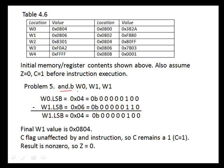Problem 5 says AND.B W0 with W1, placing the result in W1. The least significant byte of W0 is 0x04 and of W1 is 0x06. Writing these in binary and doing a bitwise AND: a 0 ANDed with anything is 0, and a 1 ANDed with 1 is 1. So the final result in hex has the least significant byte of W1 as 0x04, making the final W1 value 0x8004.